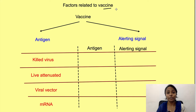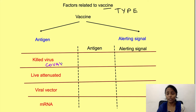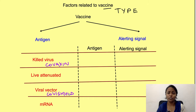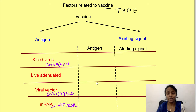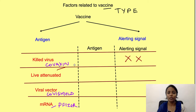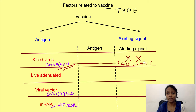The first factor which affects vaccine efficacy is the type of vaccine. There are various types: killed virus vaccines (e.g., Covaxin), live attenuated vaccines, viral vector vaccines (e.g., Covishield), and mRNA-based vaccines (e.g., Pfizer). Killed vaccines do not have an alerting or danger signal and generally elicit a lesser immune response, so for a strong response they require the addition of something extra, known as an adjuvant, which we will discuss shortly.